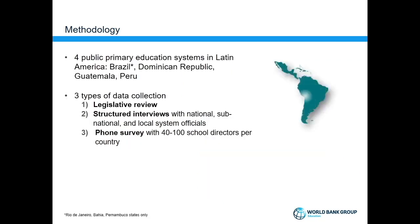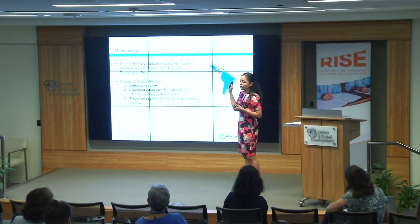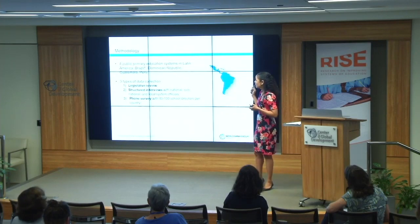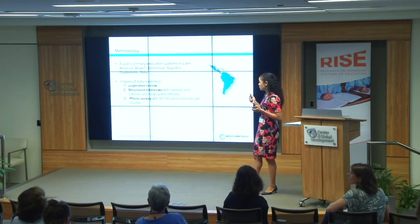We applied this in four countries in Latin America: Brazil, the Dominican Republic, Guatemala, and Peru — only three states in Brazil, not the whole country. We picked these countries because they reflect different types of systems, from municipal primary education in Brazil, to provincial responsibilities in Peru, to much more centralized national systems like Guatemala and the Dominican Republic. We conducted three types of data collection: a legislative review, structured interviews with system officials at different levels, and phone surveys with school directors.